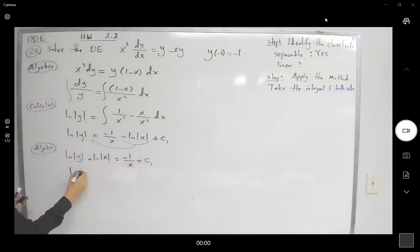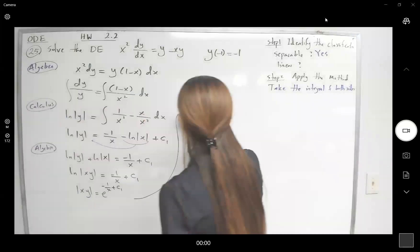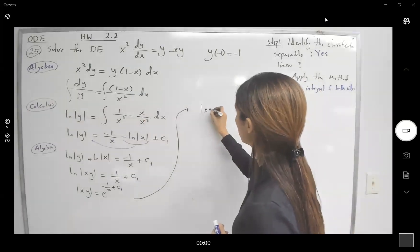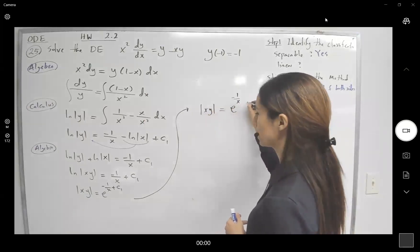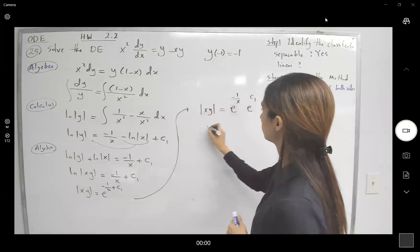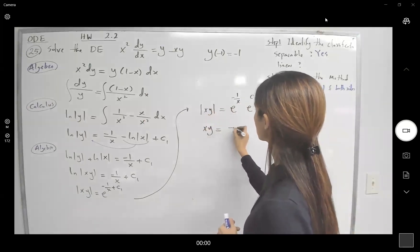So let us continue the rest here. We get absolute value of xy equals e to the power negative 1 over x times e to the power c1.